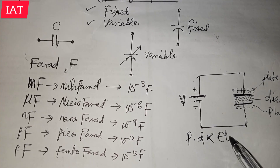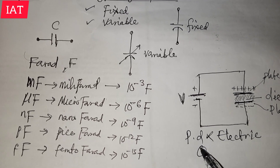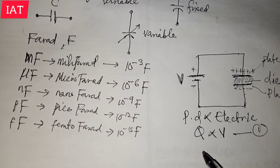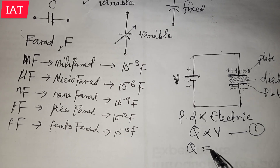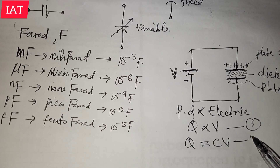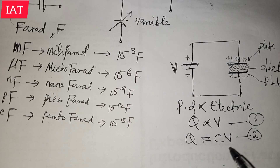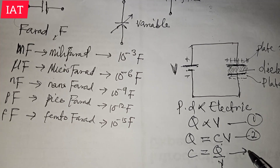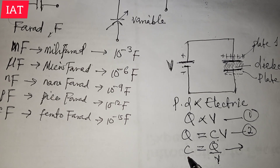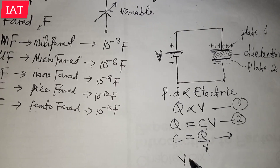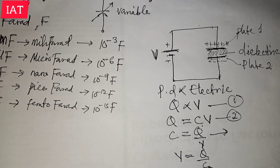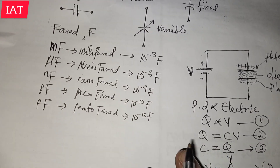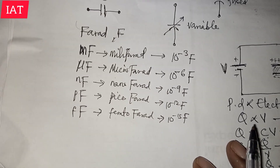The potential difference is directly proportional to the electric charge, so Q is directly proportional to V. Introducing a constant, we get Q = CV, where C is the capacitance. Making C the subject gives C = Q/V — the ability of the capacitor to store charges is called its capacitance. We can also make V the subject, giving V = Q/C. These expressions are useful for solving problems.